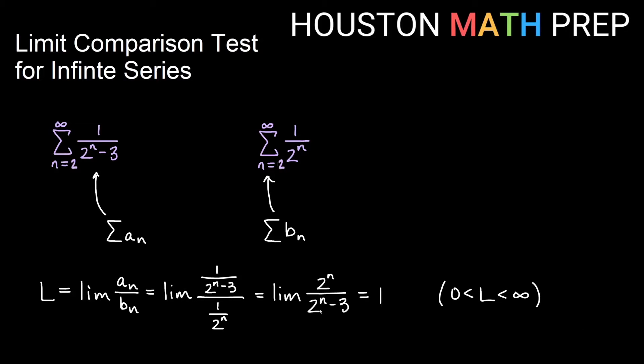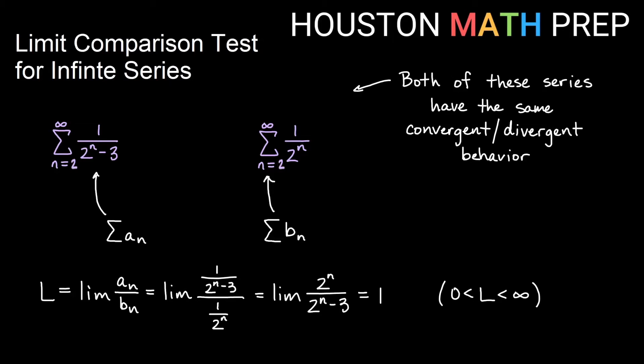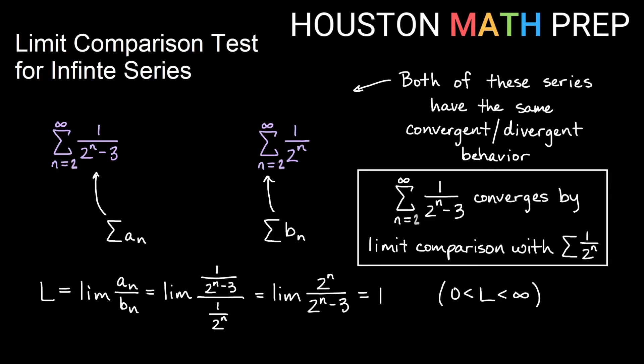We get a limit of one — that's a real number between zero and infinity — so both of these are going to have the same convergence or divergence. Since we know this is a geometric series with ratio one half, it converges. So my original series, when I compare it using limit comparison to the sum of one over two to the n, also converges.